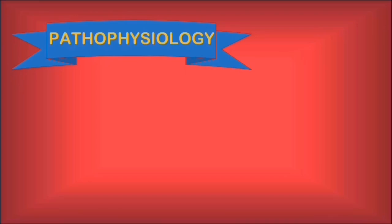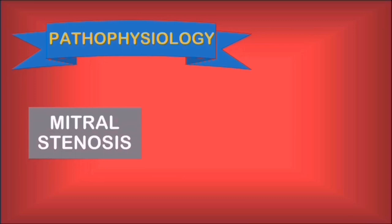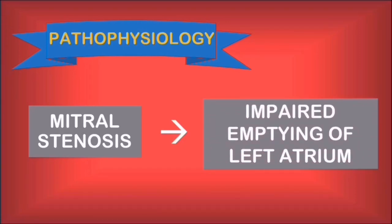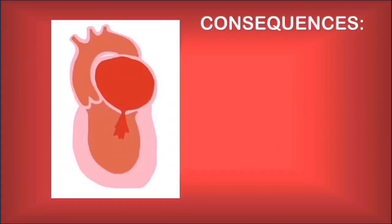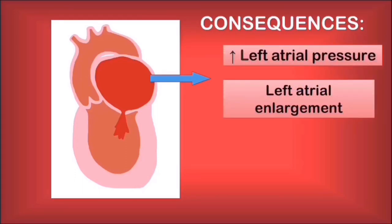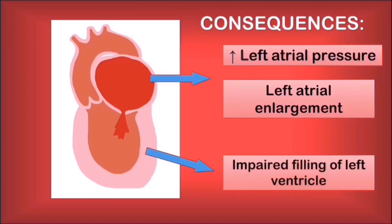Getting to the technical part: in terms of pathophysiology, the most important aspect we need to understand is that the narrow mitral valve will lead to an impaired emptying of the left atrium, which will cause a series of consequences. This impaired emptying will cause increased left atrial pressures and the eventual enlargement of this chamber. Also, because less blood gets through the narrow valve, there will be an impaired filling of the left ventricle.